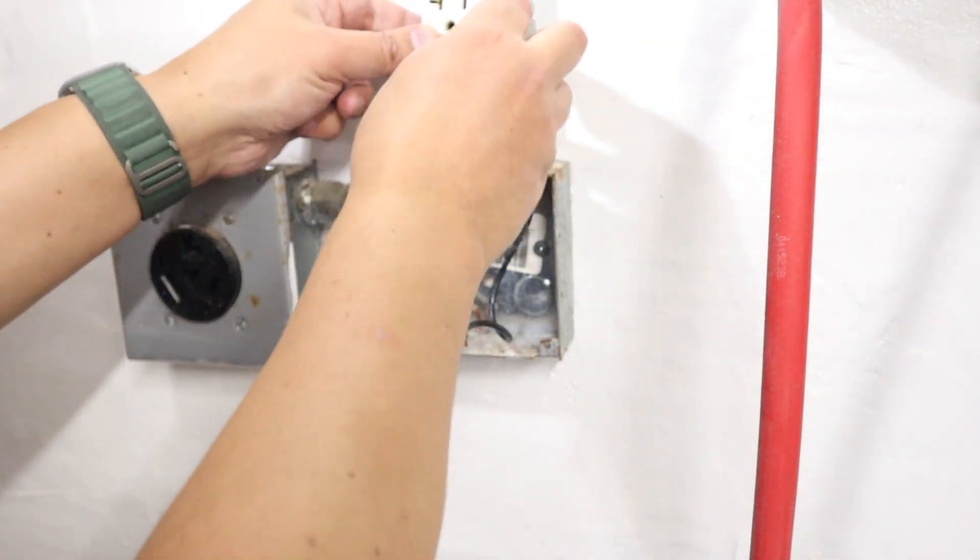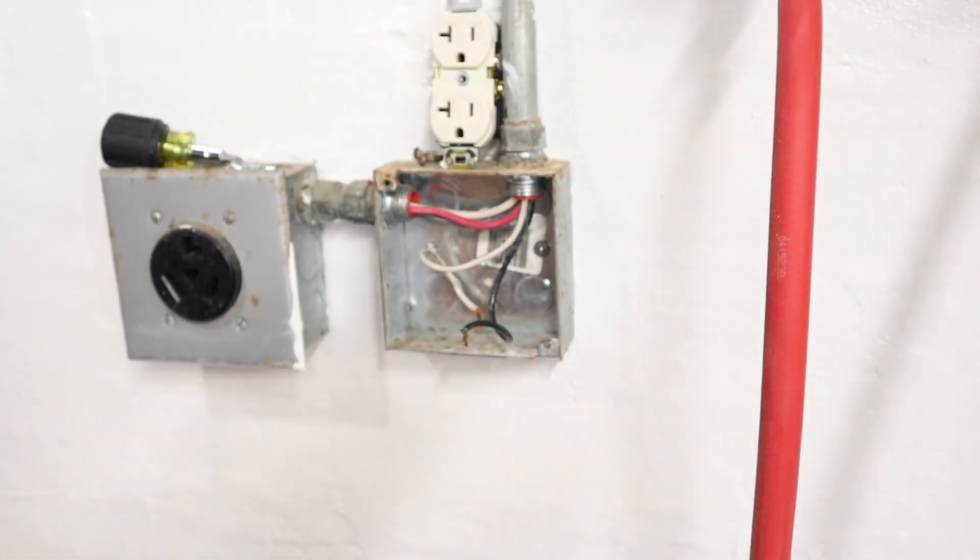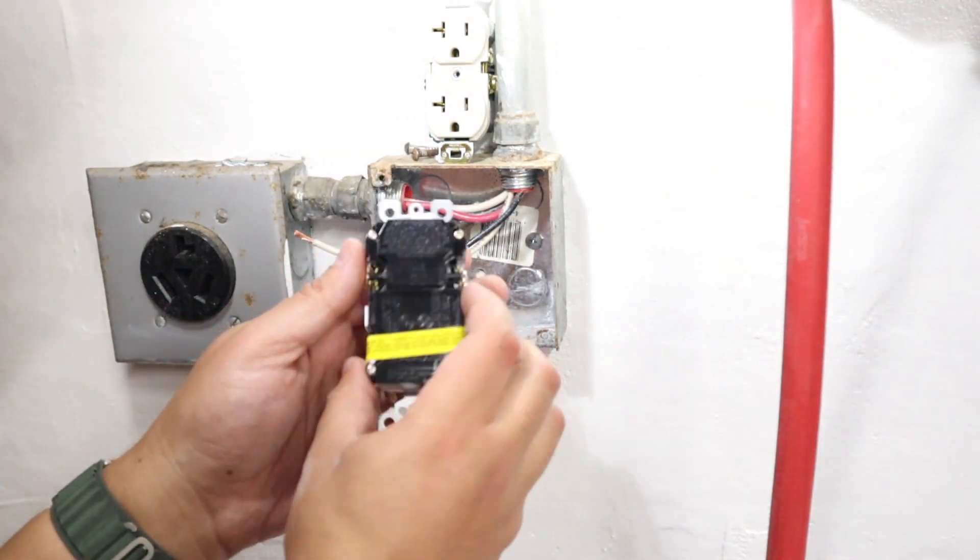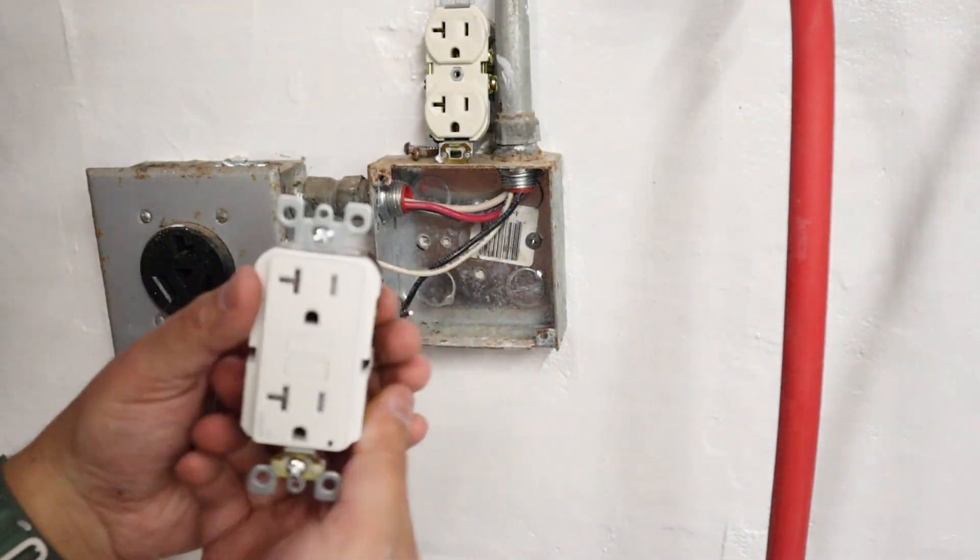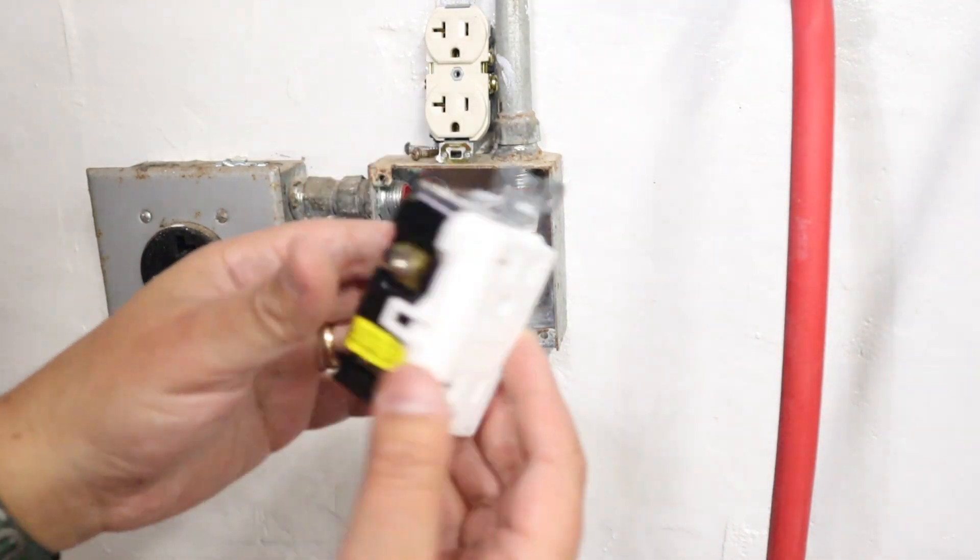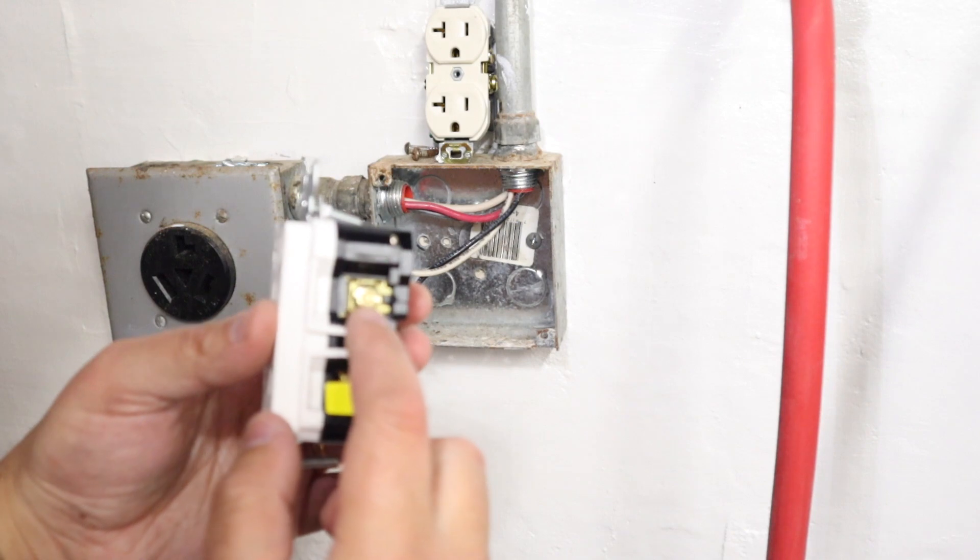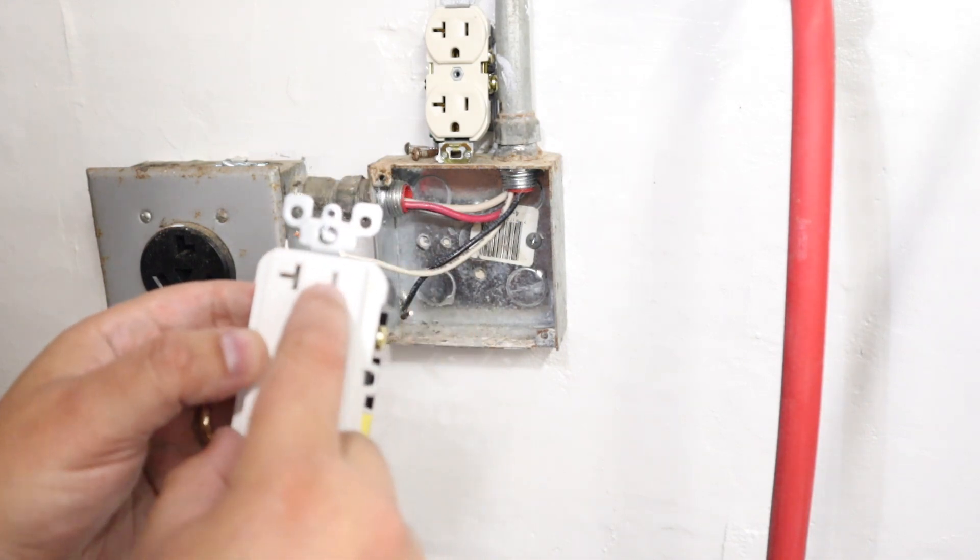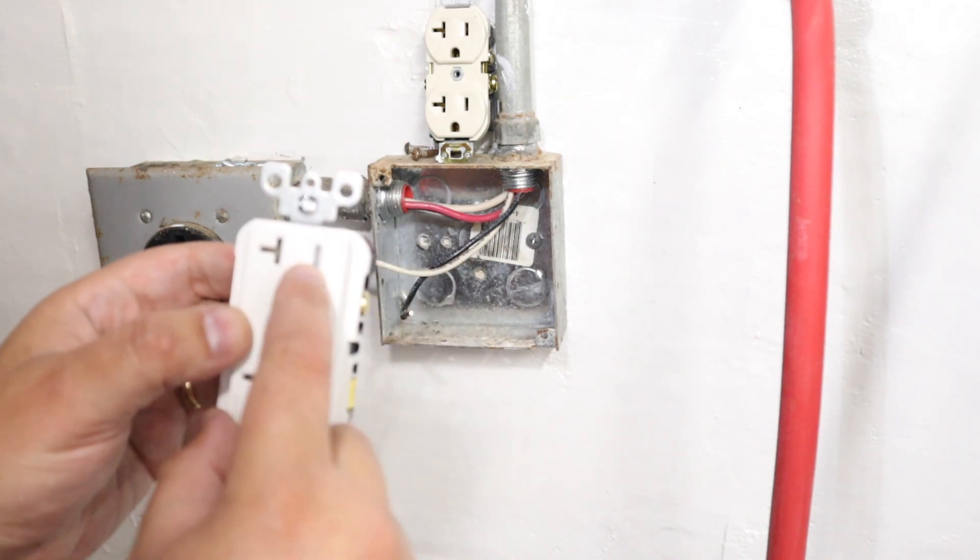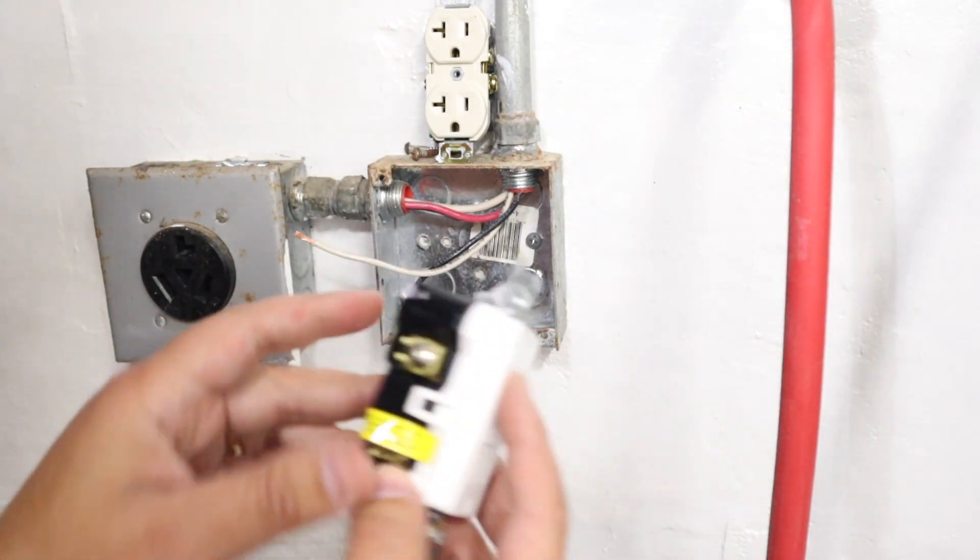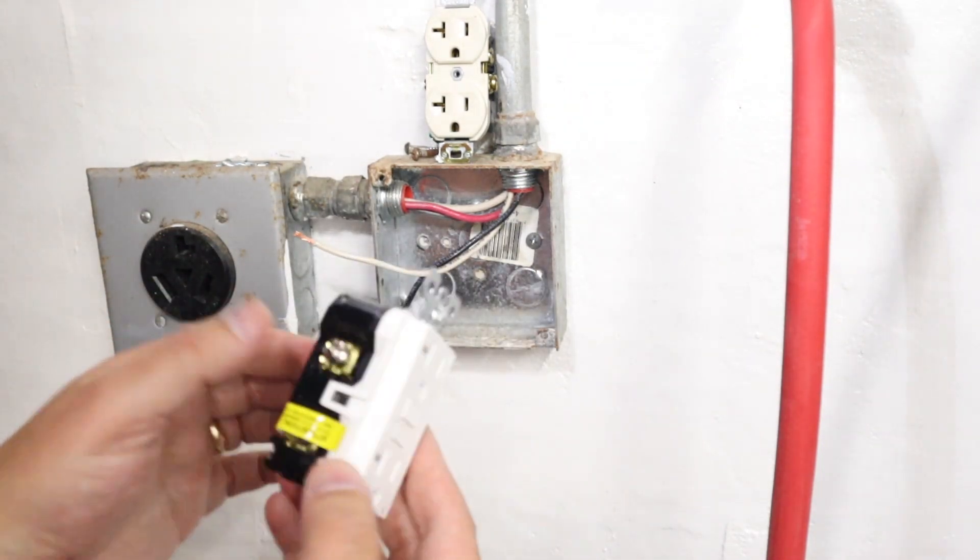So this is our old outlet, I'll put it right there for comparison. What I'm going to do next is go over to my new GFCI outlet. It's always black to brass, which is the little shorter one here - that's always the black, the hot - and white to silver.